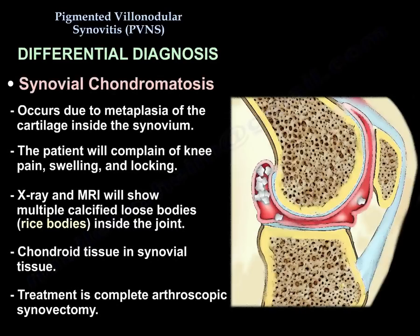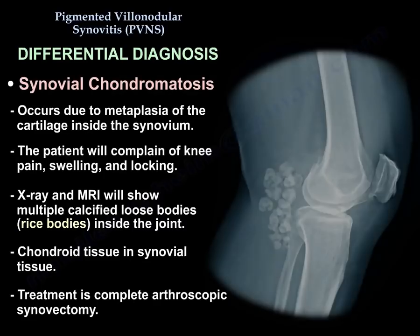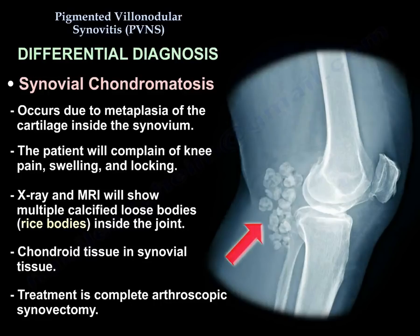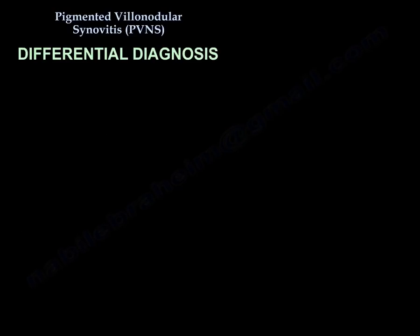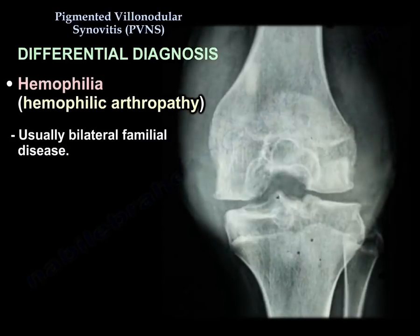Synovial chondromatosis occurs due to metaplasia of cartilage in the synovium. The patient will complain of knee pain, swelling, and locking. X-ray and MRI will show multiple calcified loose bodies — called rice bodies — inside the joint. It is chondroid tissue within synovial tissue, and the treatment is complete synovectomy. Another differential is hemophilia, or hemophilic arthropathy, which is usually a bilateral familial disease.